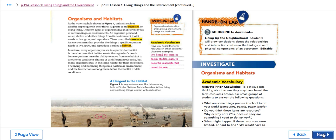In nature, every organism you see in a particular habitat is there because that habitat meets the organism's needs. Some organisms have the ability to move from one habitat to another as conditions change or as different needs arise, but many organisms stay in the same habitat for their entire lives. The living and non-living things in a particular environment and the interactions among them define the habitat and its conditions.